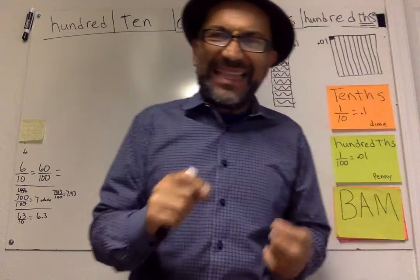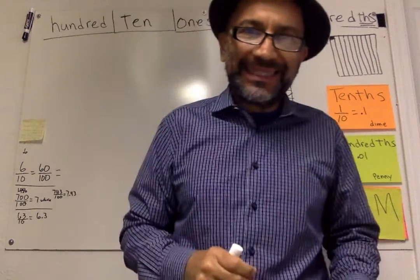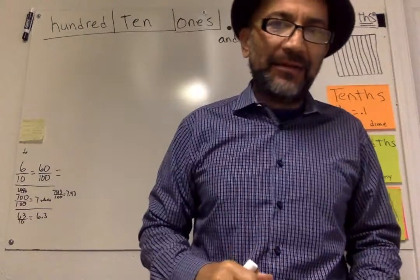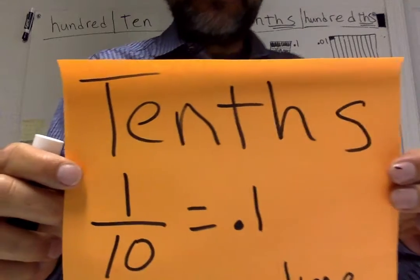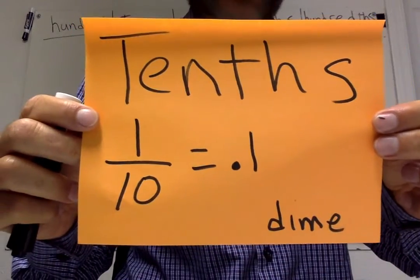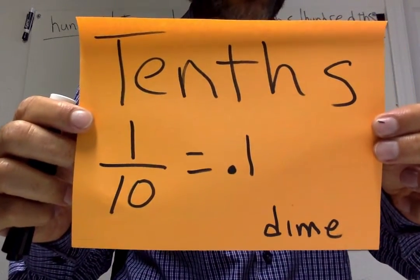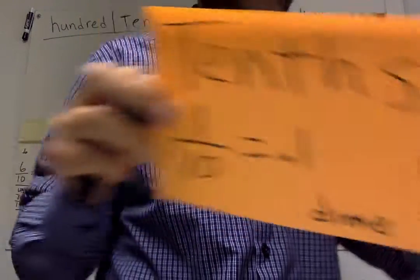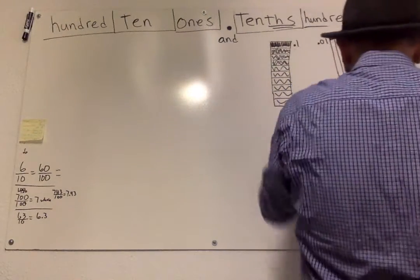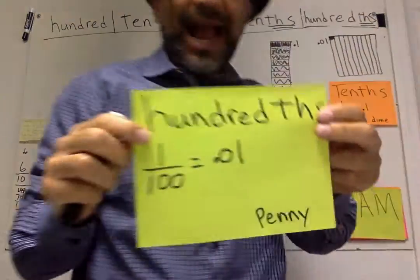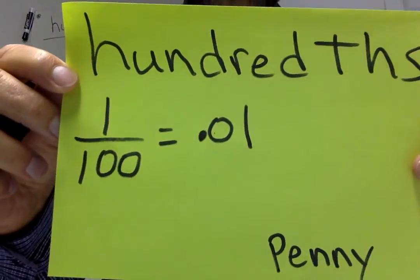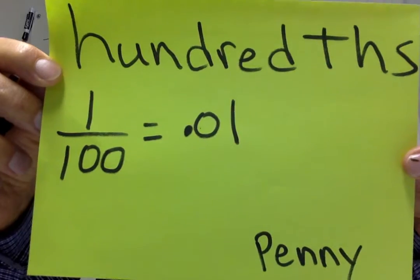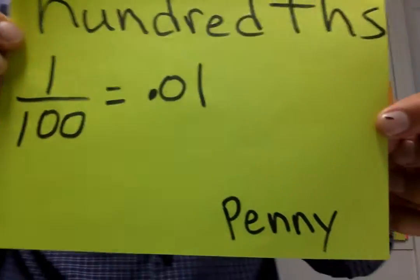So today I'm doing a video on tenths and hundredths. Tenths, it's like a dime, 0.1, it's one tenth. And we got a hundredth, that's one out of 100, or 0.01, or it's a penny.